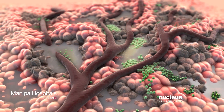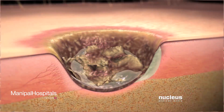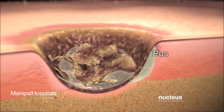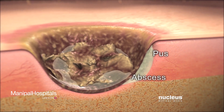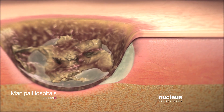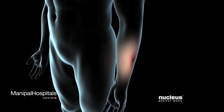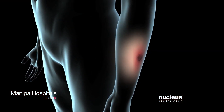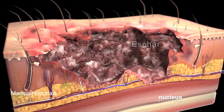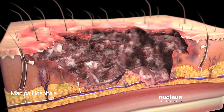The wound's healthy tissues may become infected. The infection may develop into a pocket of pus called an abscess that impedes wound healing. A wound resulting from a burn may form a hardened crust of dead tissue called an eschar that can prevent healthy tissue growth and healing.